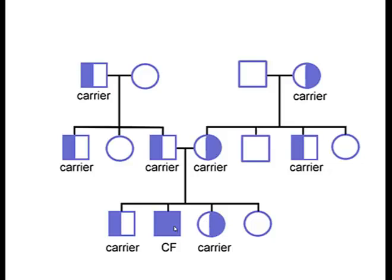Sickle cell anemia, which we'll discuss a bit later in class, follows the same pattern of inheritance. It affects different ethnicities and is therefore not quite as common in North America. It can be more easily treated than cystic fibrosis, but sickle cell anemia works in exactly the same way as far as inheritance goes.